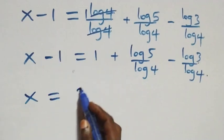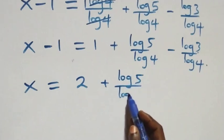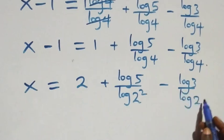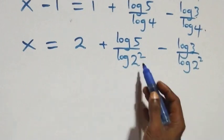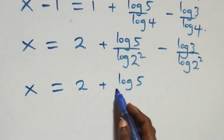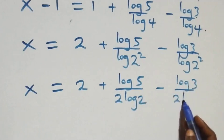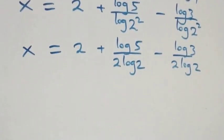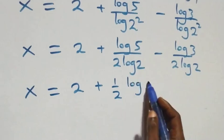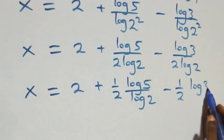We take minus 1 to the other side, so x equals 1 plus 1 which is 2, then plus log 5 over log 4. We can express 4 as 2 squared, so log 4 becomes 2 log 2. Applying the power rule, x equals 2 plus log 5 over 2 log 2, minus log 3 over 2 log 2. We can also write this as x equals 2 plus one-half times log 5 over log 2, minus one-half times log 3 over log 2.